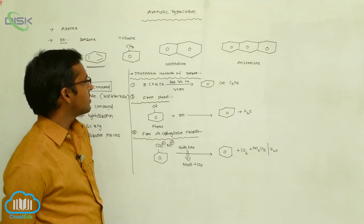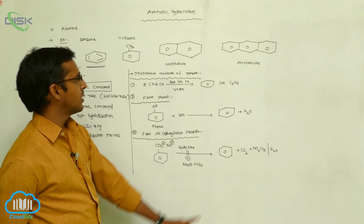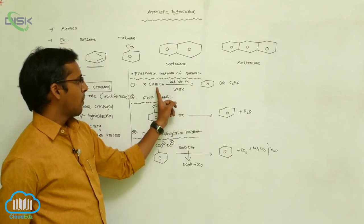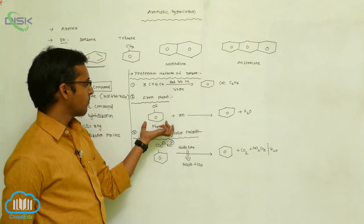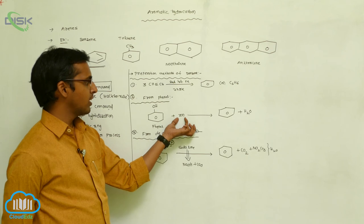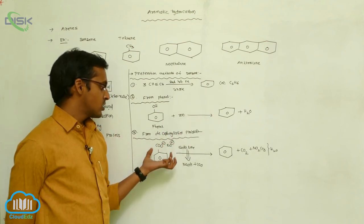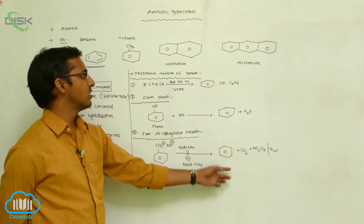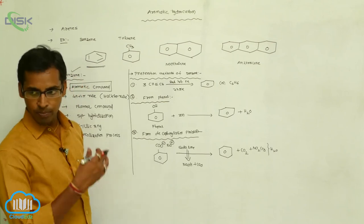These three methods are for the preparation of benzene. First, acetylene undergoes cyclic polymerization to produce benzene. Second, phenol is reacted with zinc metal and undergoes dehydration. Third, decarboxylation of sodium benzoate gives benzene. These are the three methods of preparation of benzene.